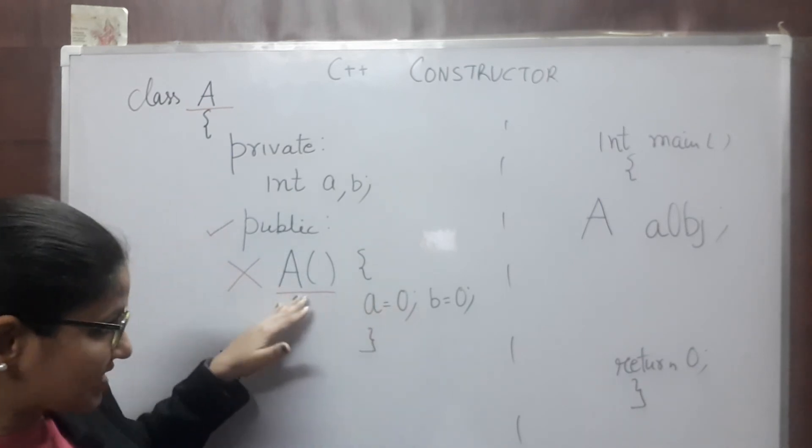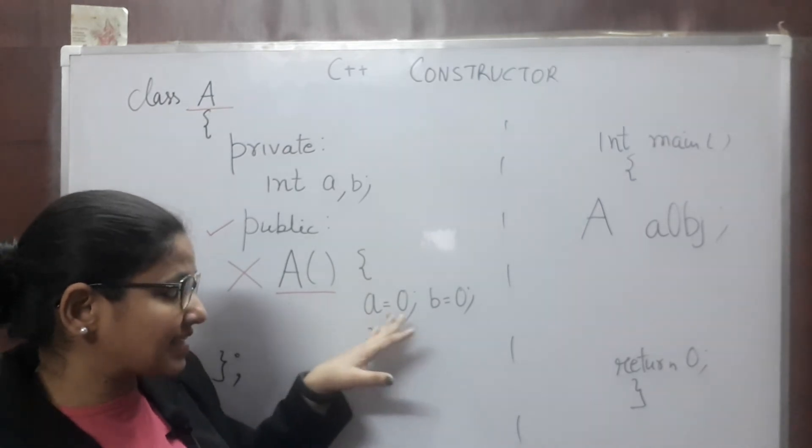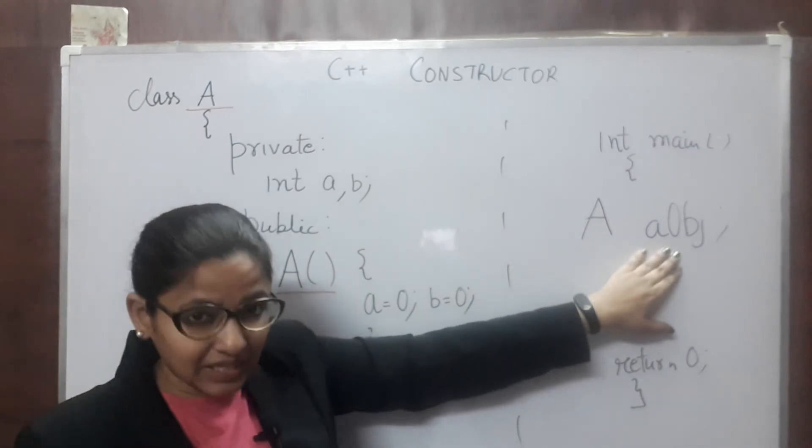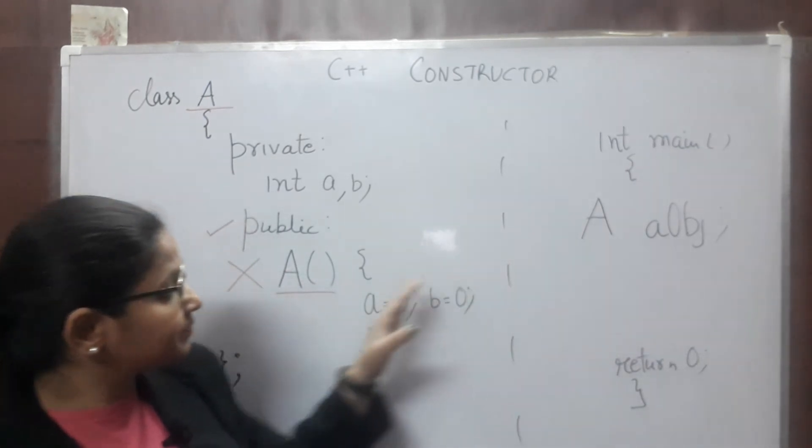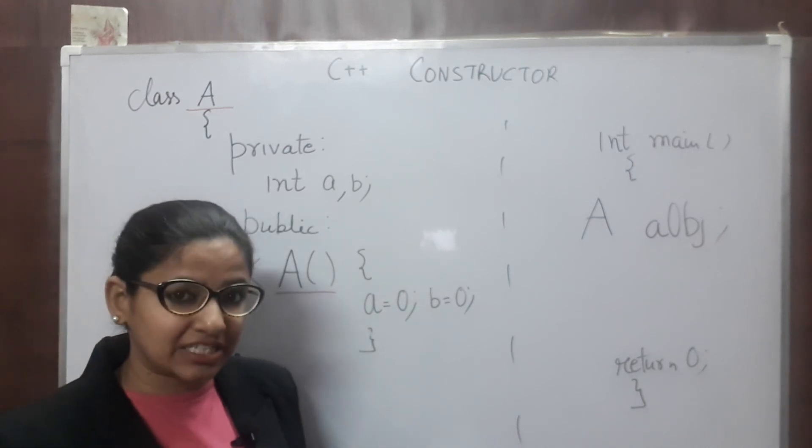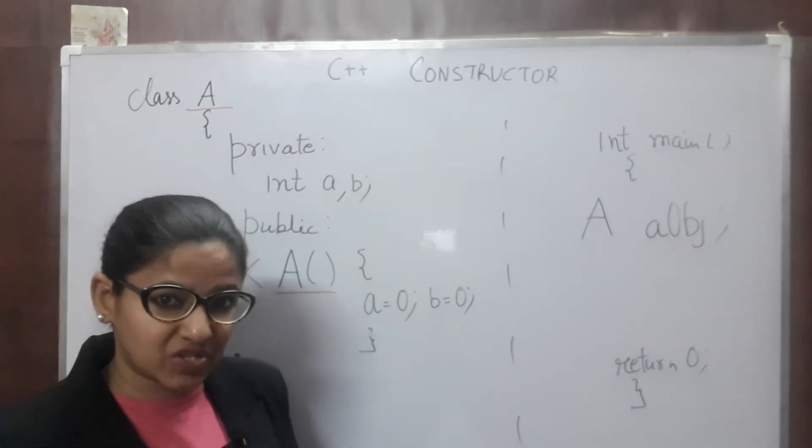When this constructor is invoked, next in the statement, as you can see, we are initializing A and B with values 0. So, when your object, A object is created, A and B variables, they both are created and initialized with value 0. So, this is the concept of constructors.